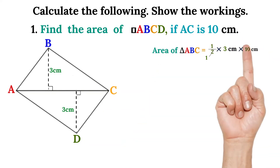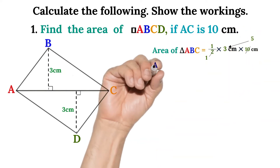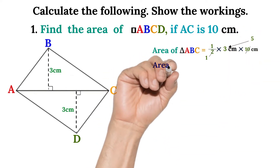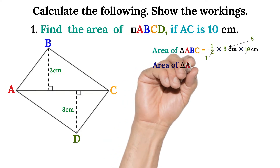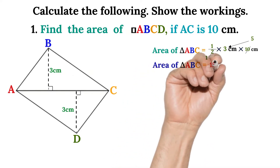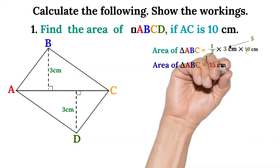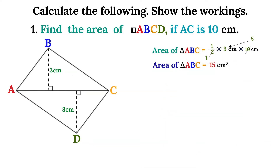Two cancels itself to one, and then two cancels ten to five. So when you multiply five by three you will get 15 centimeters squared. Area of triangle ABC is equal to 15 centimeters squared.